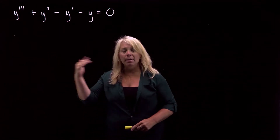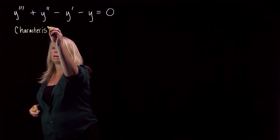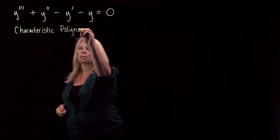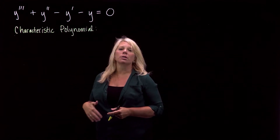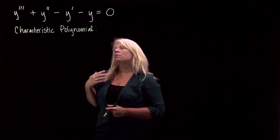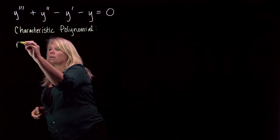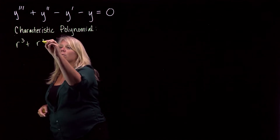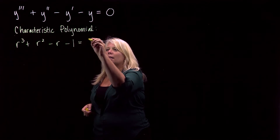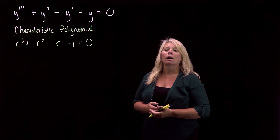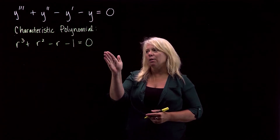For this type, you should recognize what it is and know to write down the characteristic polynomial, which uses the same coefficients as in the differential equation. The terms in the polynomial are power functions with powers equal to the order of the derivatives. Our book uses r, so we get 1·r³ plus 1·r² plus (−1)·r minus 1. We set that equal to zero — this is called the characteristic equation — and find the zeros of the characteristic polynomial.